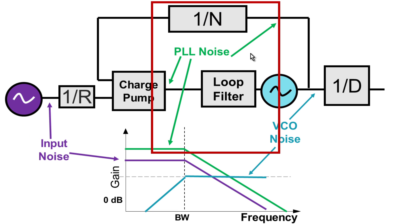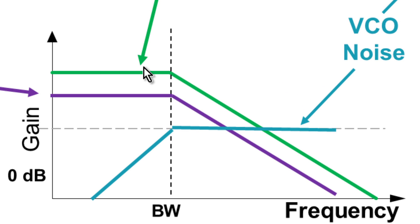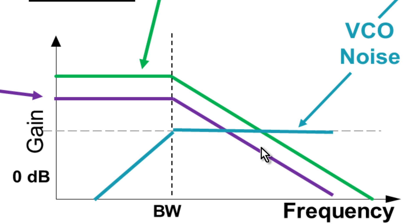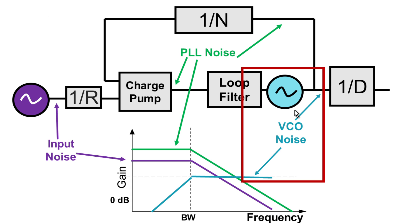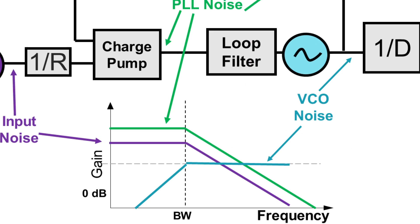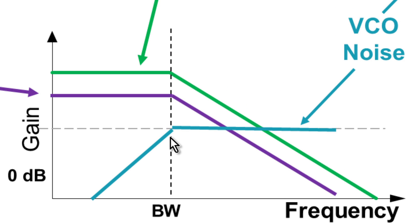The PLL noise, which consists of noise from the charge pump and dividers, is low-pass filtered and then attenuated after the loop bandwidth. Finally, the VCO phase noise is actually high-pass filtered. So below the loop bandwidth, it is attenuated. Above the loop bandwidth, it passes through.